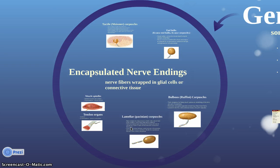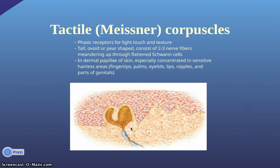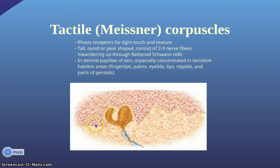The encapsulated nerve endings are nerve fibers that are wrapped in glial cells or connective tissue. The connective tissue enhances the sensitivity of the nerve fiber or makes it more selective with respect to which modality it responds to. The tactile corpuscles are phasic receptors for light touch and texture. They are tall, ovoid or pear-shaped, and consist of two to three nerve fibers meandering up through flattened Schwann cells. They occur in the dermal papillae of the skin, and are especially concentrated in sensitive hairless areas like the fingertips, palms, eyelids, lips, nipples, and parts of the genitalia.